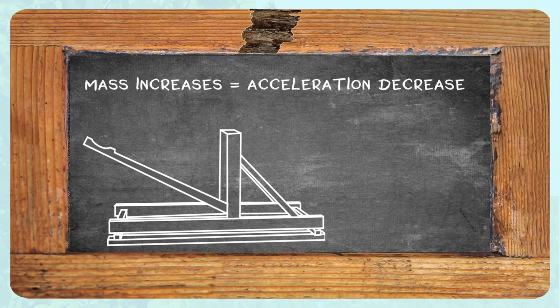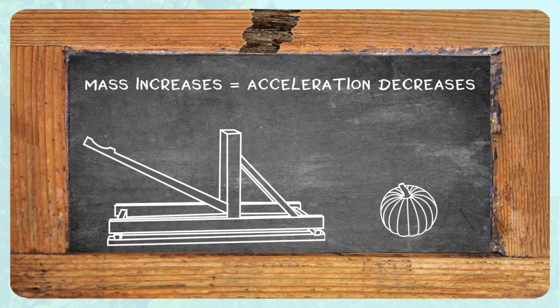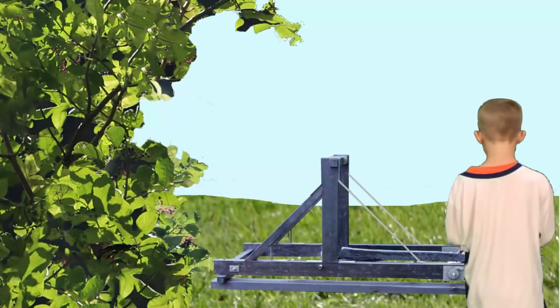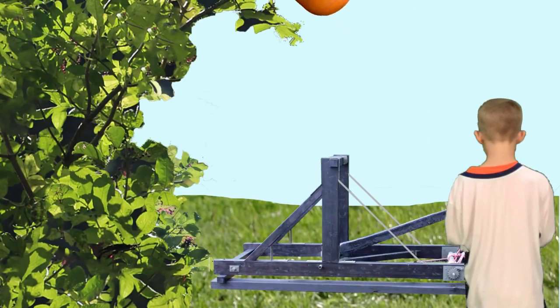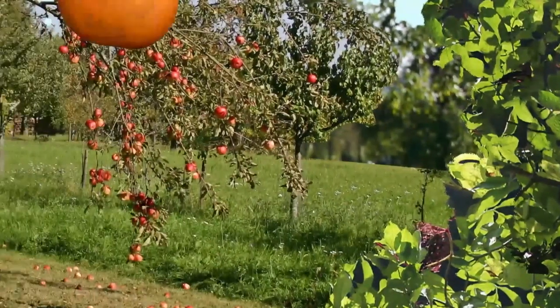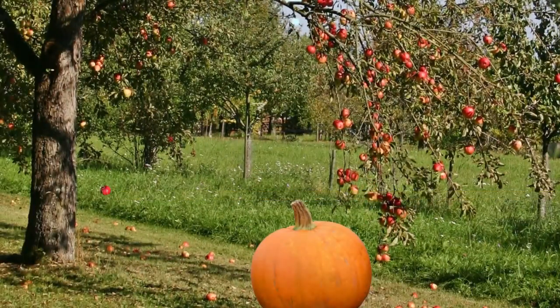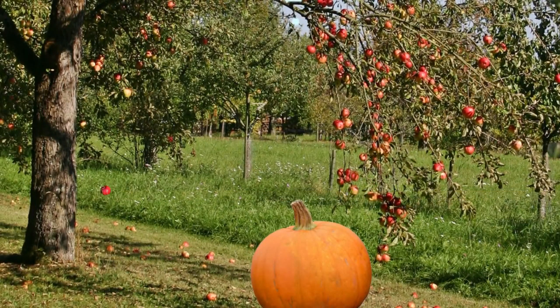The other part of Newton's Second Law, as the object's mass increases, its acceleration decreases, can be demonstrated in the same way. Using the same catapult, your brother can send a giant pumpkin flying a much shorter distance than a tiny apple. The pumpkin has a greater mass, so the acceleration is smaller.